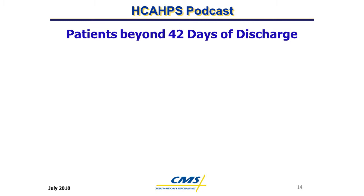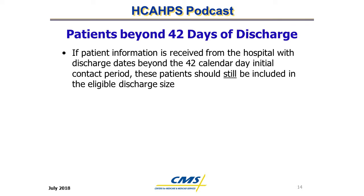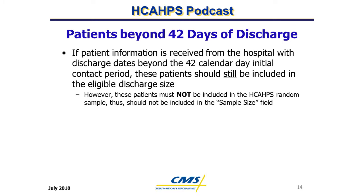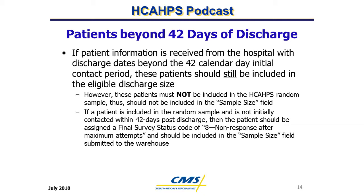Patients Beyond 42 Days of Discharge. If patient discharge lists are received late and include discharge dates beyond the 42 calendar day initial contact period, these patients should still be included in the eligible discharge size count, but should not be included in the sample size count, as they must not be included in the random sample. If patients drawn into the random sample are not contacted within 42 days post-discharge, they should be assigned a final survey status code of 8 (non-response after maximum attempts) and included in the sample size field count.